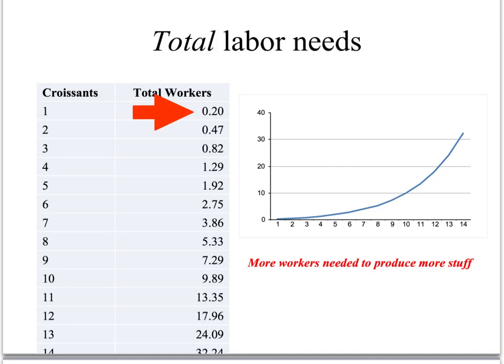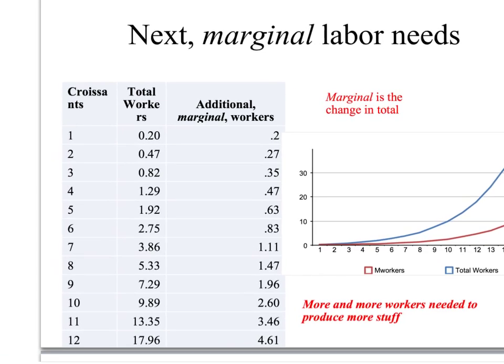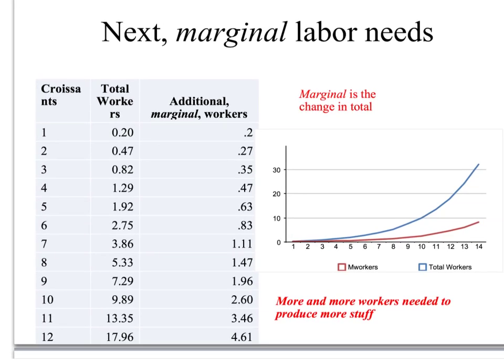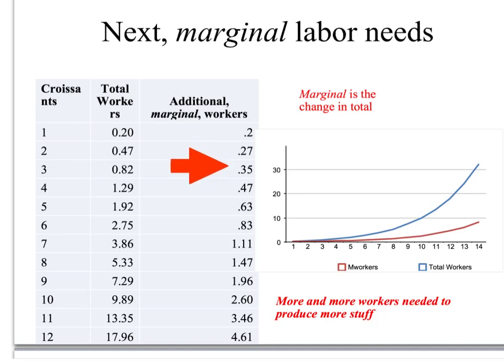Maybe that's like 12 minutes. The second croissant — two croissants — you need 0.47, almost half a worker, 30 minutes. The difference is the marginal worker that you need for one more croissant. First croissant: 0.2 workers, one-fifth of an hour, 12 minutes. Second croissant takes 0.27 workers, a quarter of an hour. Third croissant: the difference between the labor needed for three croissants and the labor needed for two croissants is what's needed for the third croissant. The third croissant takes 0.35; fourth croissant, 0.47.